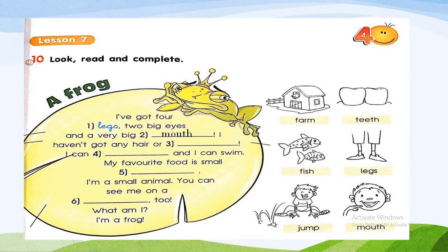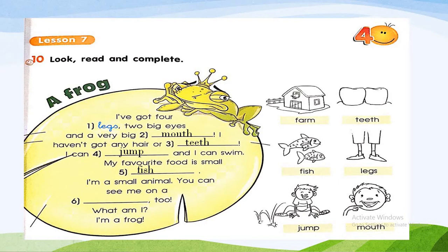'I haven't got any hair or teeth. I can jump and I can swim. My favorite food is a small fish. I am a small animal — you can see me on a farm too. What am I?' A frog! Make sure you write the words in your activity book and match the words: mouth, teeth, jump, fish, and farm.